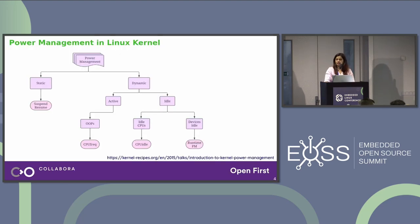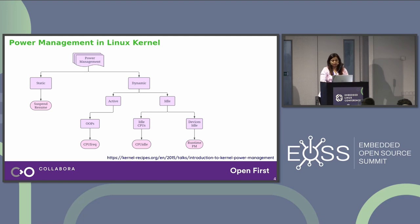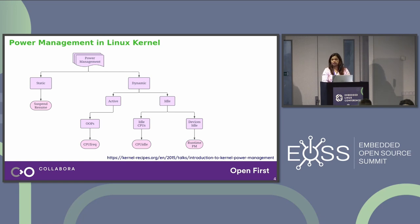This is the big picture of how power management looks in the Linux kernel today. There are two models: static and dynamic. Runtime power management falls under the dynamic category, specifically for idle devices. I won't be speaking about the other frameworks — partly because they're not relevant and partly because I don't know them. But there's a very nice talk from Kevin Hillman with an overview of all the frameworks if you'd like to learn more.